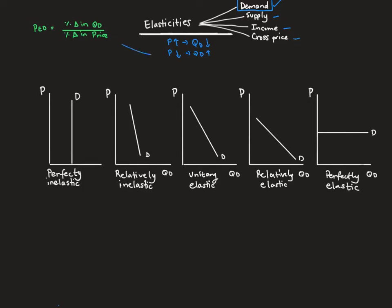On the left-hand side here, we have the price elasticity of demand formula, which is equal to the percentage change in quantity demanded over the percentage change in price. What we're doing is finding the elasticity and bringing it into a formula. This will allow us to calculate the elasticities for each type of product.